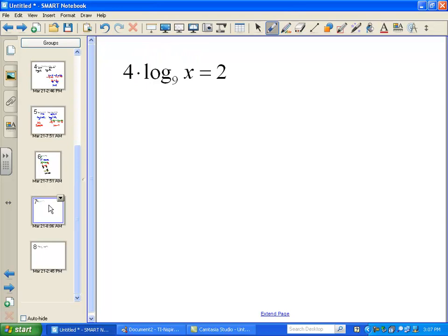since this is an equation, I can actually get rid of that 4 by dividing. We'll do that to both sides, and I get log base 9 of x is equal to 1 half. And that worked out nice, because 2 and 4, they simplify to 1 half,